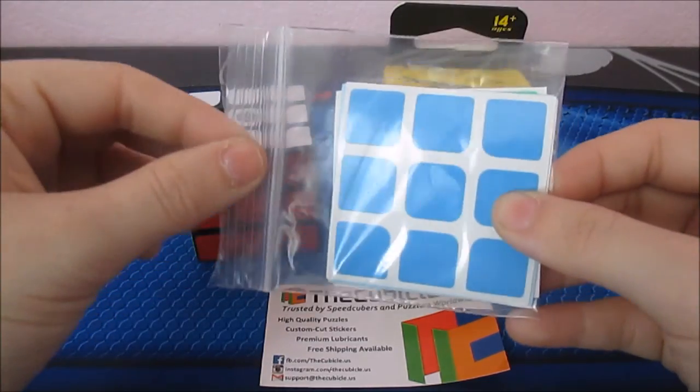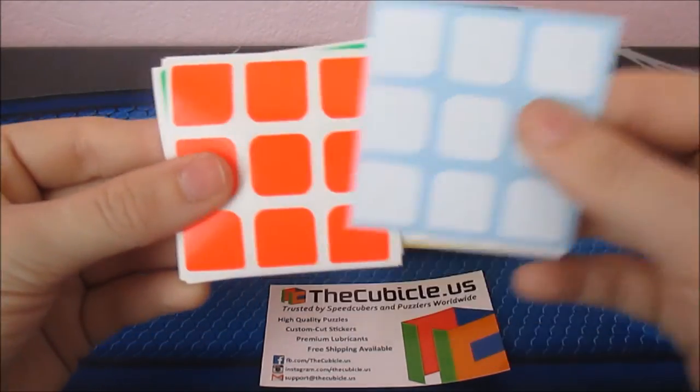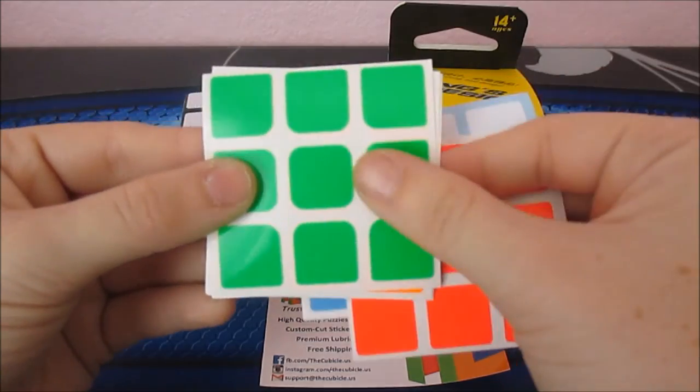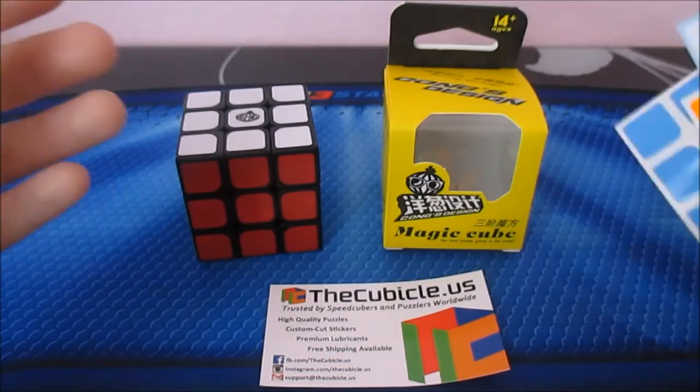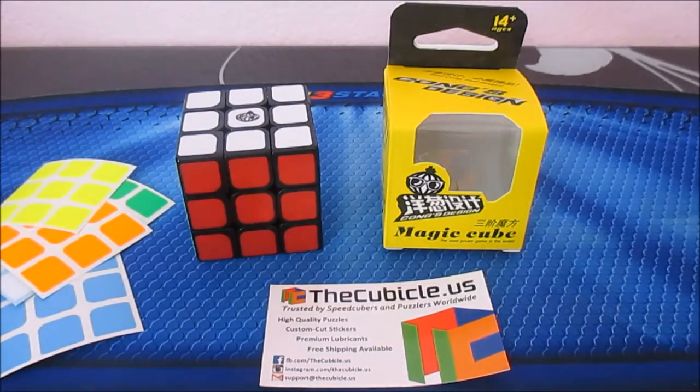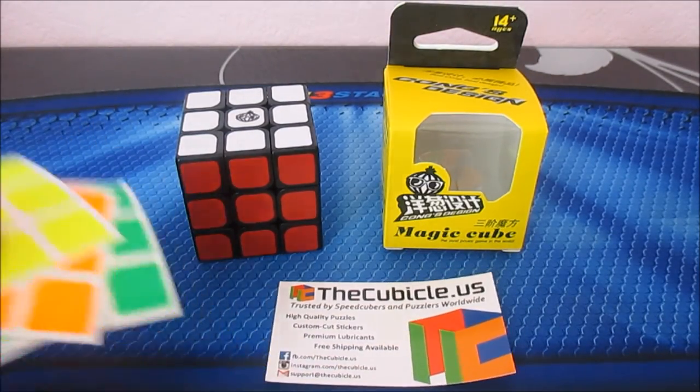I believe this is just a Fulbright set. So let me go ahead and pull these out just to show you guys briefly. Here we have a bright blue, a white, a fluorescent red, fluorescent green, fluorescent orange, and fluorescent yellow. So those are the stickers that I got with this cube. And that's everything that I received in my unboxing. Thank you guys so much for watching. Hopefully you guys enjoyed this video and hopefully I'll see you guys in my next video. Bye guys.